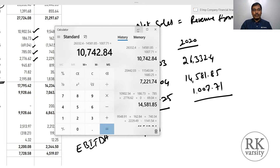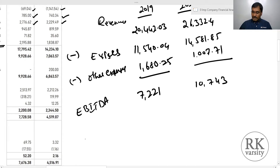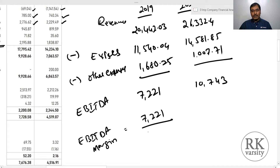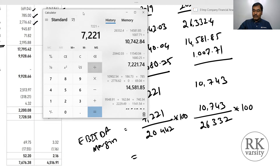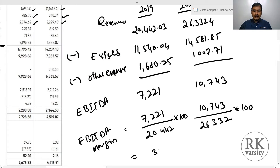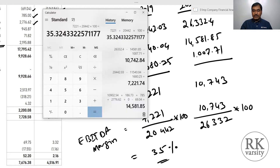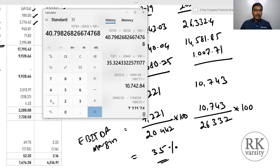EBITDA for 2019: revenue 20,442.03 minus expenses 11,540.04 minus other expenses 1680.25 equals approximately 7,221. For 2020: 26,332.4 minus 14,581.85 minus 2007.71 equals approximately 10,743. The EBITDA margin for 2019 is 7,221 divided by 20,442 into 100, which equals approximately 35 percent.